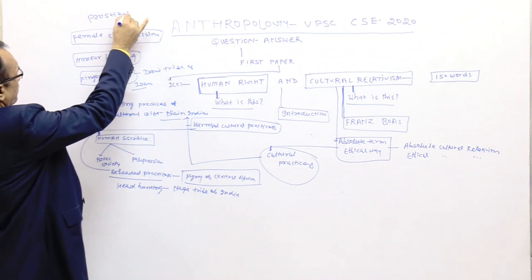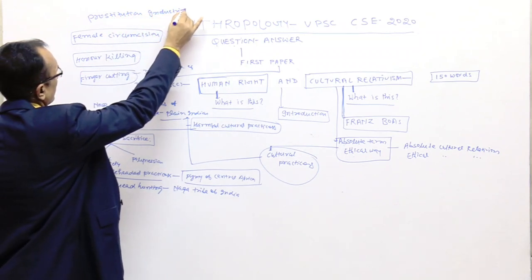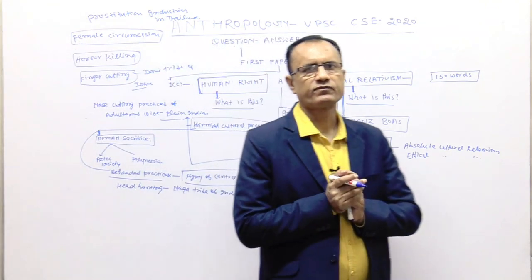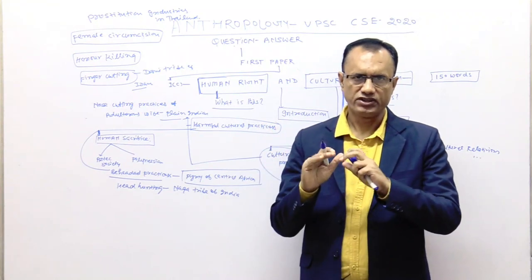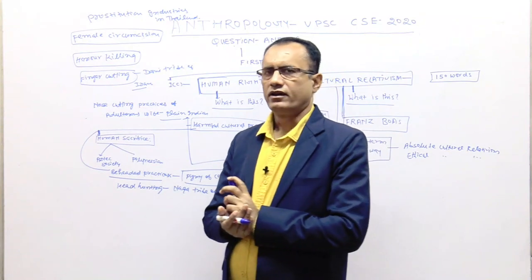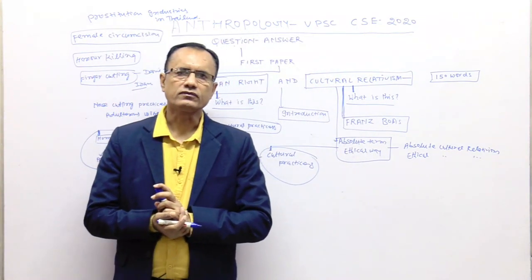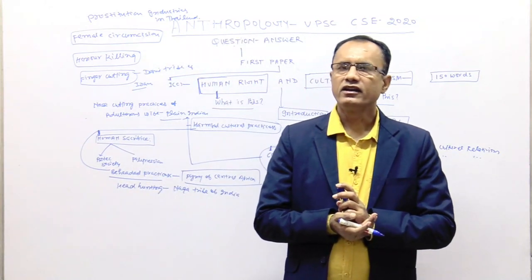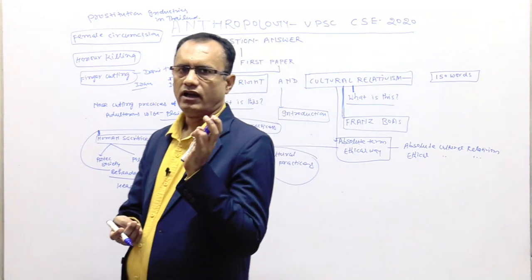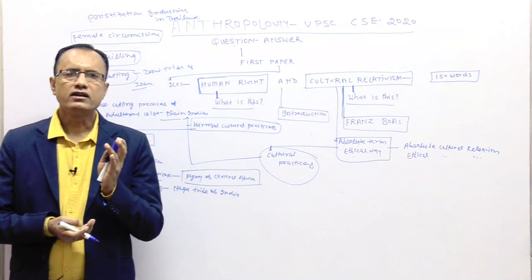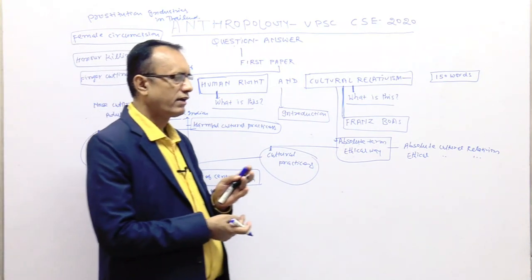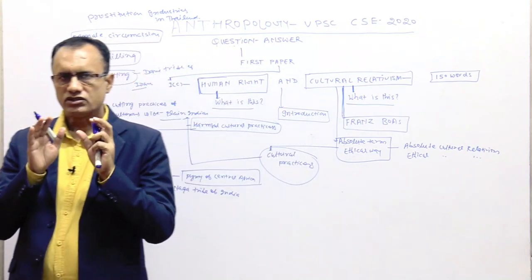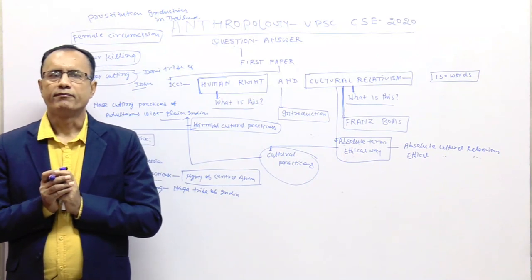We can also mention prostitution industries in Thailand. Apart from that, there are homicides, genocide, child infanticide, anti-semitism, human trafficking, and lower position of women. These types of practices are available in many human societies.